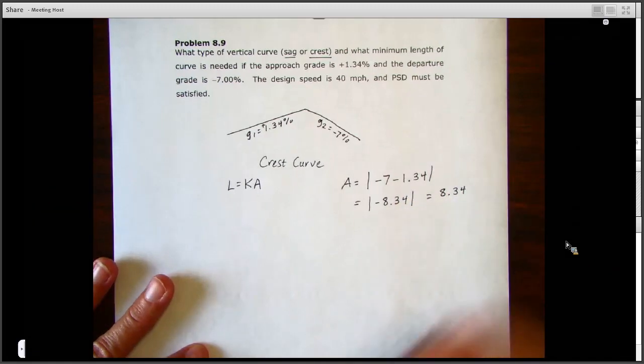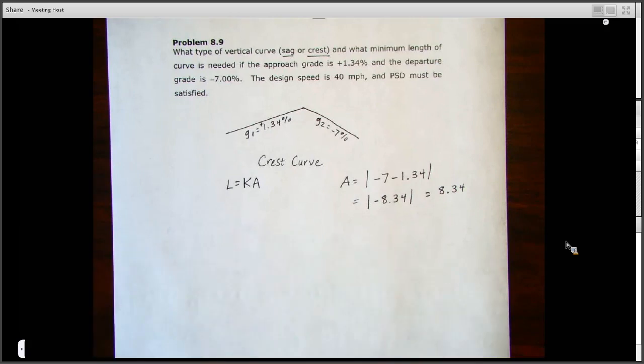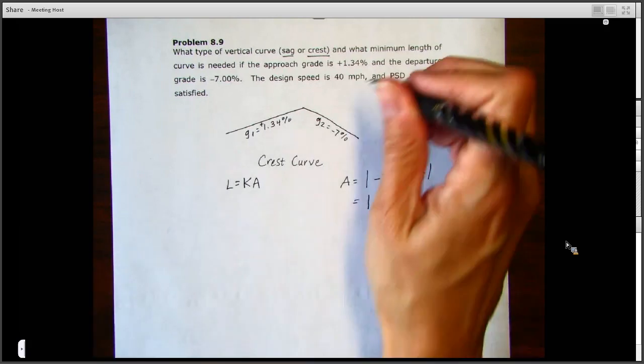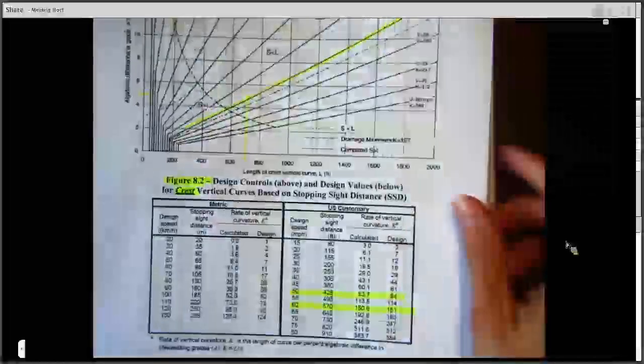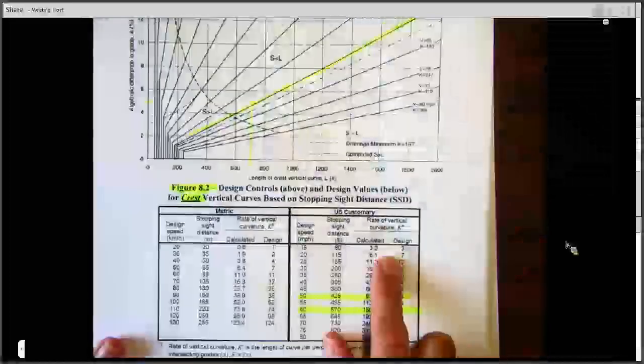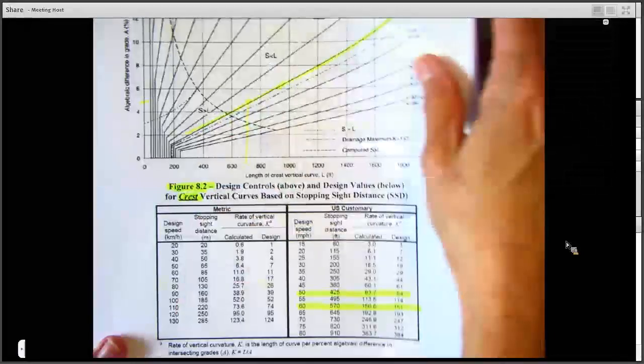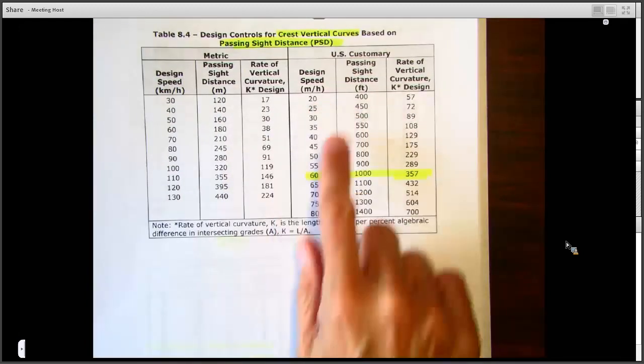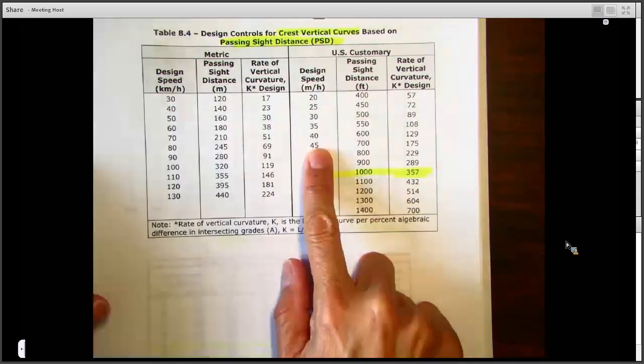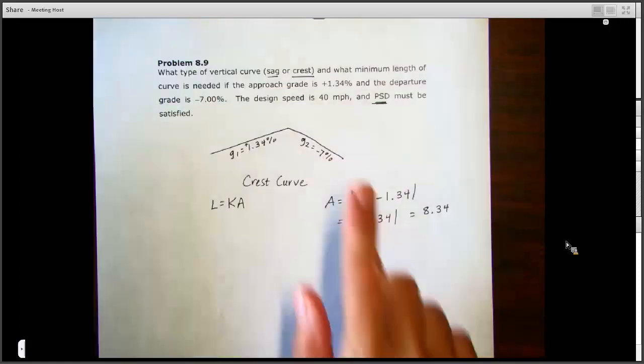And then for our K value, again PSD, passing sight distance, must be satisfied. Remember we've been using these tables for stopping sight distance for crest vertical curves, but now we're looking at passing sight distance, so we're on to this table for crest vertical curves.